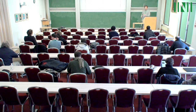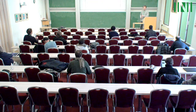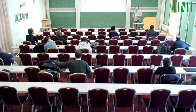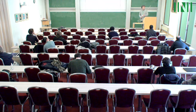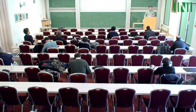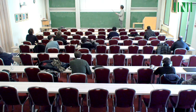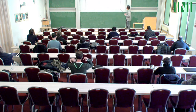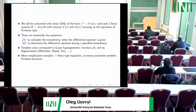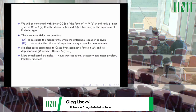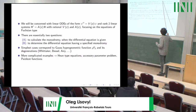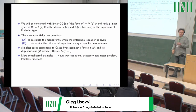Many thanks to the organizers of this nice meeting and also thanks to everyone who is still here. We will be concerned with linear ODEs — either a scalar second-order ODE, basically a Schrödinger equation with some potential, or rank-two linear systems. Both V and A will be assumed to be rational functions, or A(z) will be a two-by-two rational matrix.